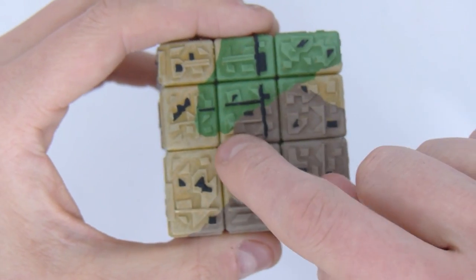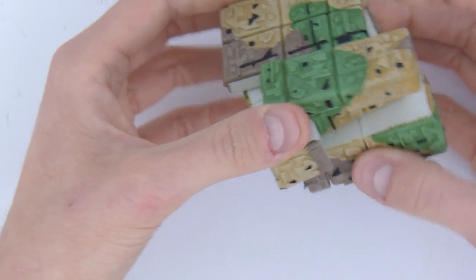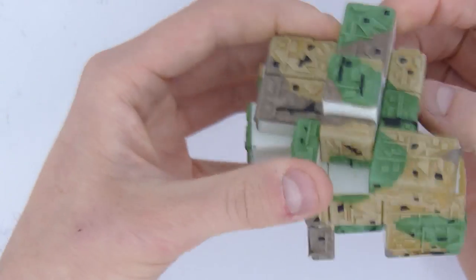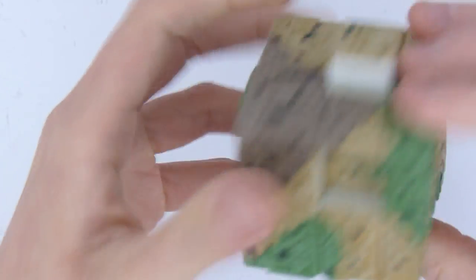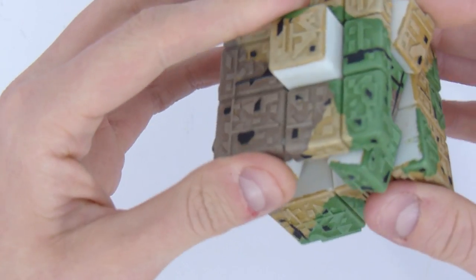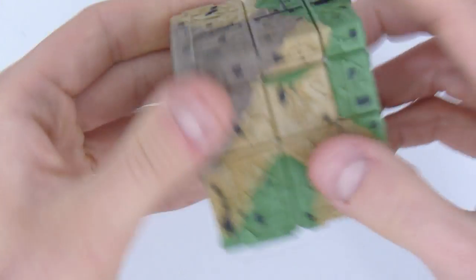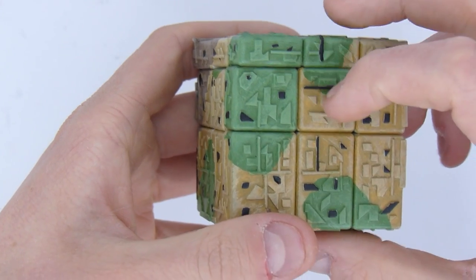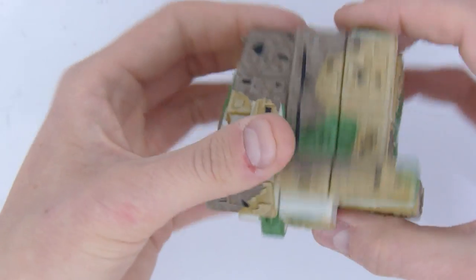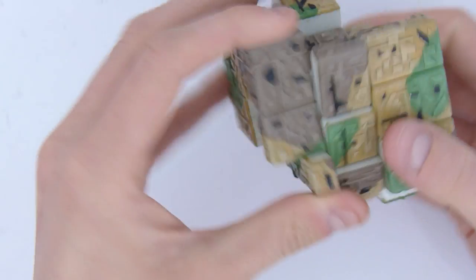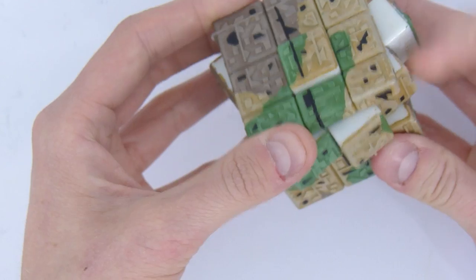But you also have center orientation due to the paint that you can see here. For example, where this has to be in the right orientation. Now see, if this is in the wrong orientation and the top face is as well, you would end up with something like that, you see, wrong orientation. So this is more than a mirror cube even when it comes to solving.